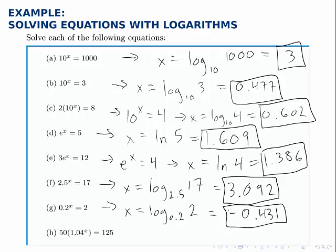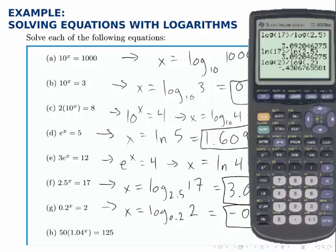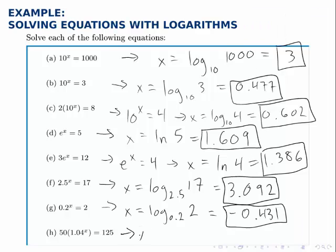For the last one, I first need to isolate the exponential, so I'll divide both sides by 50. So 125 divided by 50 is 2.5, which means that 1.04 to the x equals 2.5, or x equals log base 1.04 of 2.5.